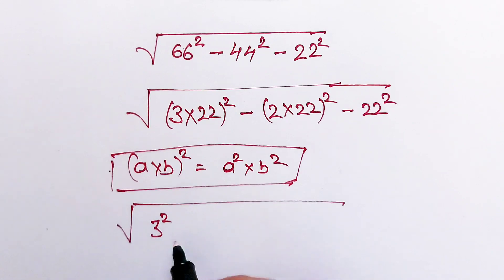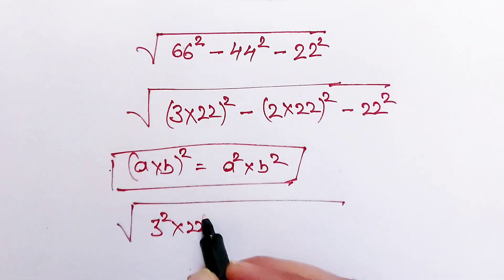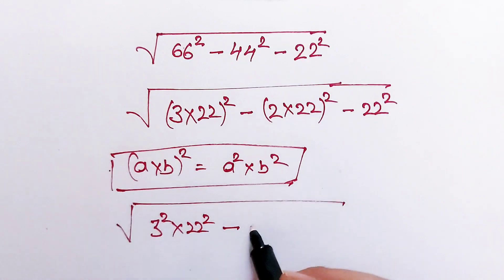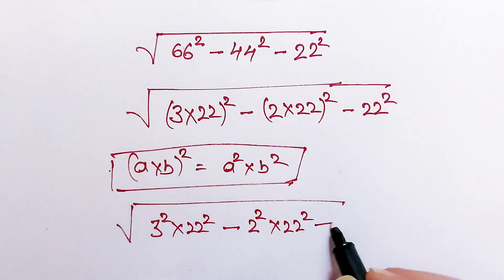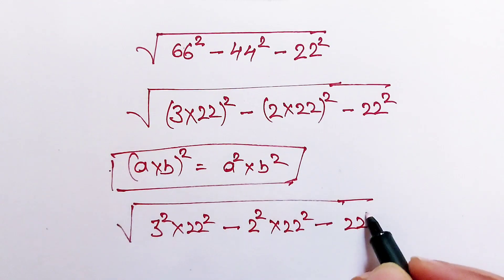3 squared multiply 22 squared minus 2 squared multiply 22 squared minus 22 squared.